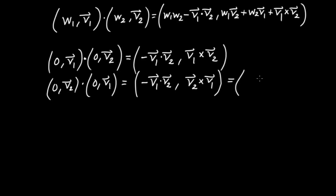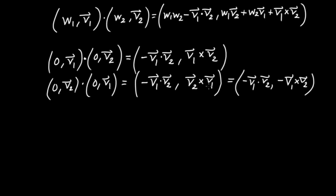Now the cross product is what's called anti-commutative. V2 cross V1 is actually equal to minus V1 cross V2 — that's what it means to be anti-commutative. When I flip the order, that comes with a minus sign. The flipping of the order comes with a minus sign.